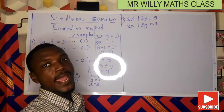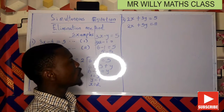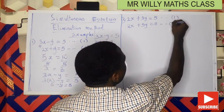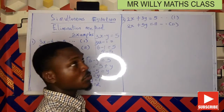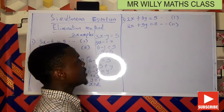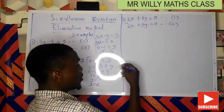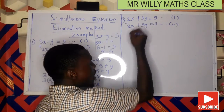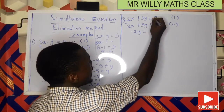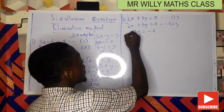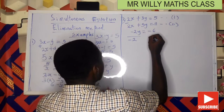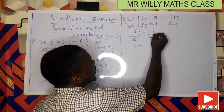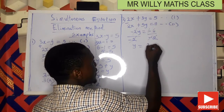Since both equations have the same coefficient of 2 for x, we can subtract equation two from equation one to eliminate x. So 2x minus 2x equals 0. Then 3y minus 5y equals minus 2y. And 5 minus 11 equals minus 6. So minus 2y equals minus 6. Dividing both sides by minus 2 gives y equals 3.